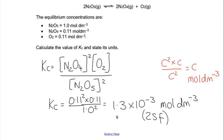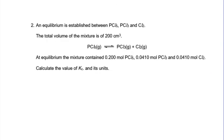So that was the first example. Our last example in this little section is a little bit more difficult. Not much. We've still got at equilibrium the mixture contained. But this time notice that they're in moles. And Kc is about concentration. So how do you convert moles to concentration?